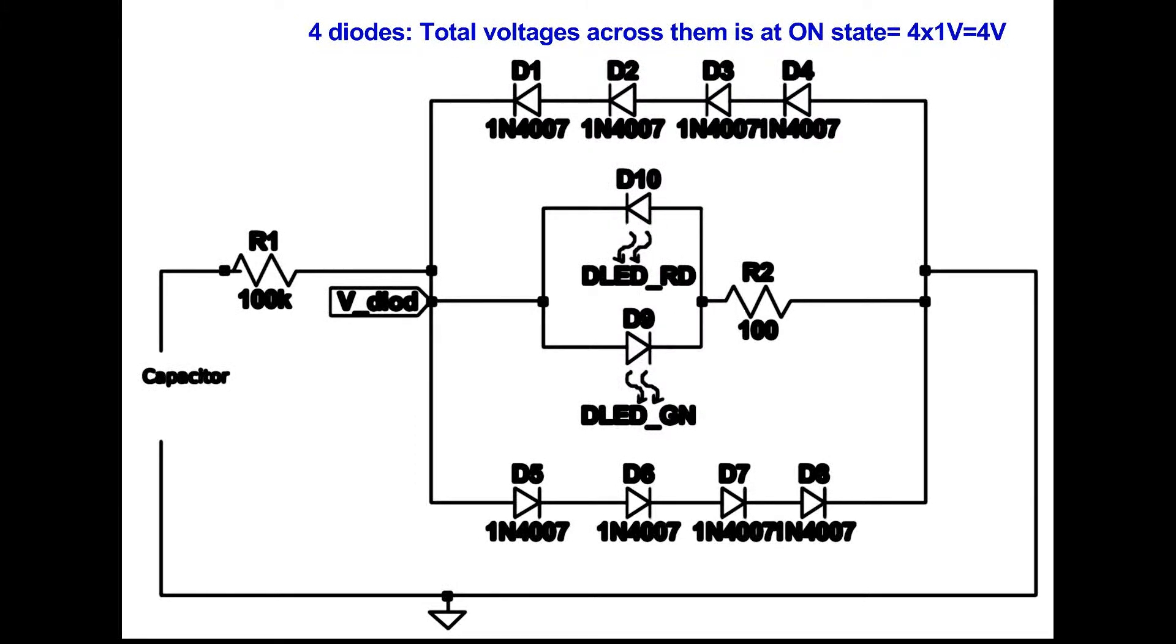R1 will decide how much current will flow in the whole circuit. R2 will protect the LED. Depending on the diode, the max voltage could be calculated. I used 1N4007. Look at the datasheet to get a better idea.